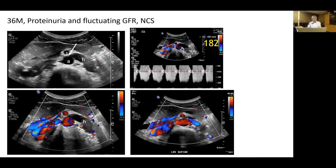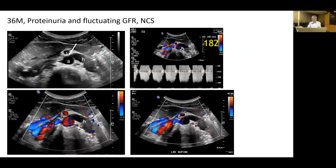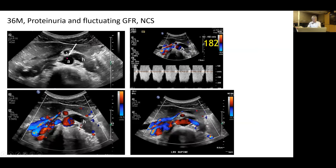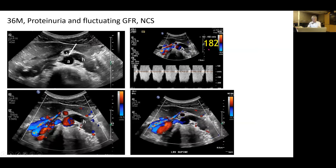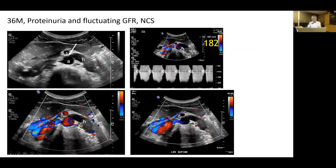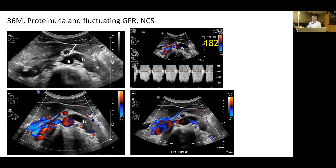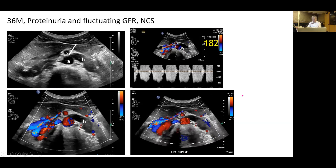A 36-year-old man with proteinuria and fluctuating glomerular filtration rate due to severe Nutcracker syndrome: the aorto-mesenteric left renal vein is tightly compressed between the aorta and superior mesenteric artery with a peak flow velocity of 182 cm/s. Absent flow signals in the dilated hilar left renal vein indicate stagnant flow. In severe Nutcracker syndrome, glomerular filtration rate can fluctuate between morning and evening.